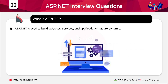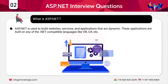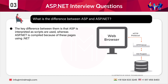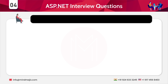ASP.NET is used to build websites, services, and applications that are dynamic. These applications are built on any of the .NET compatible languages like Visual Basic, C#, and so on. The key difference between ASP and ASP.NET is that ASP is interpreted as scripts are used, whereas ASP.NET is compiled because pages use .NET languages. ASP.NET pages are compiled to MSIL — Microsoft Intermediate Language.